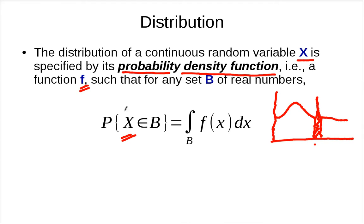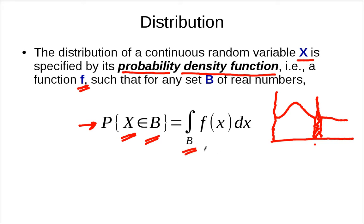This density describes the probability according to these equations. We say that the probability that X belongs to some set B — a set of reals, which may include a range or any kind of set — is described by the density function f. Specifically, you take the integral over the set B of f(x) dx.